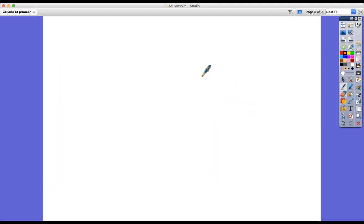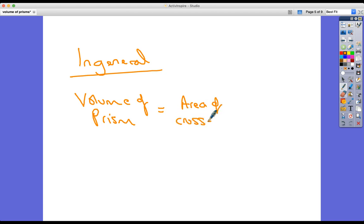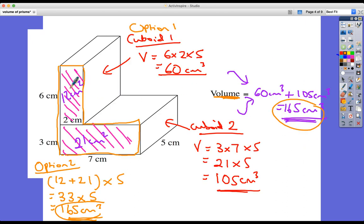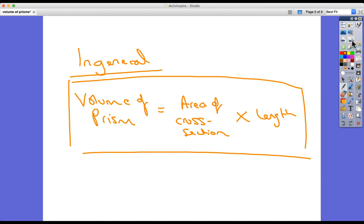Let's have a look at this. So we could say, in general, the volume of a prism is the area of the cross-section times by the length, which is exactly what we just did right there, in that last example, in option two, we found the total area of that cross-section, and then just times it by five. Let's have a look at another shape. So the volume of the prism is the area of the end cross-section, just times by the length.